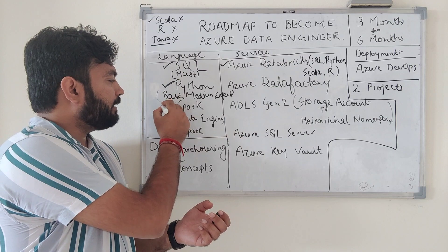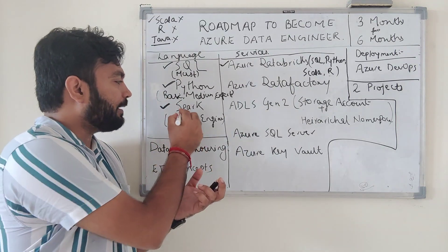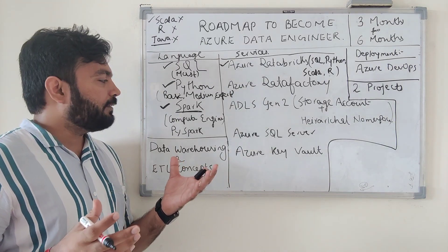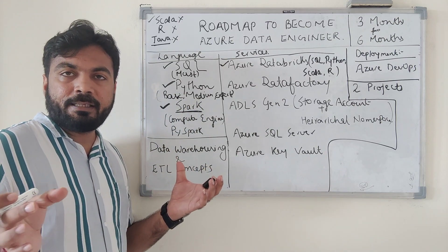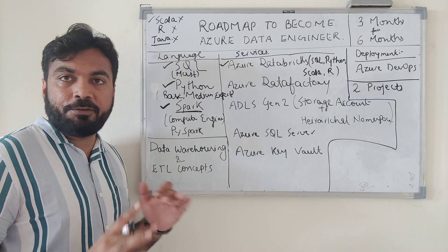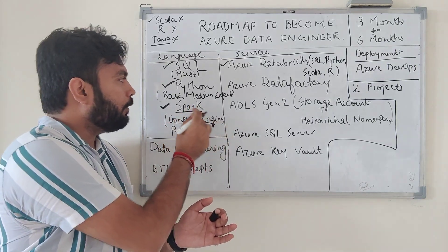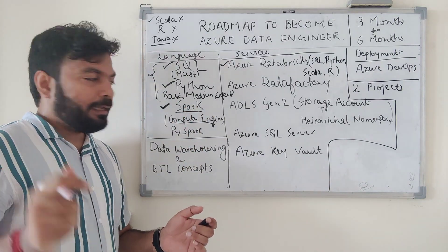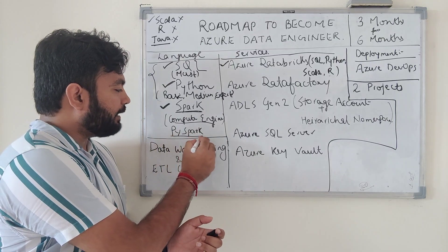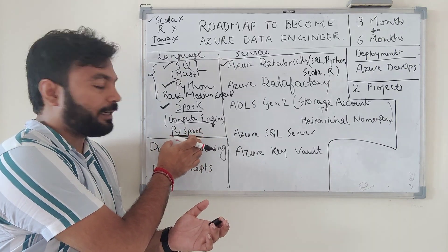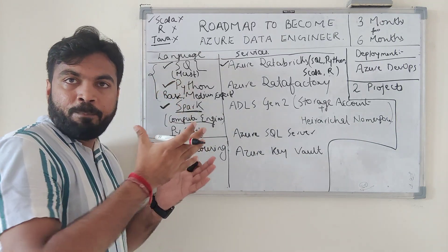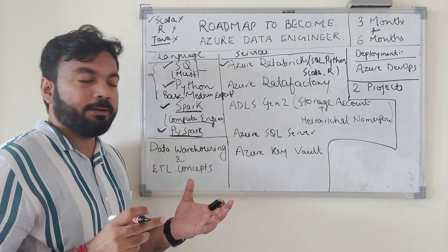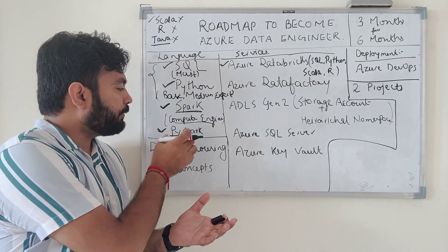Now let's come to another very demanding technology: Apache Spark. Spark handles data that is very large in size. A common question is whether Spark is a programming language — the clear answer is no. Spark is a compute engine over which your code written in SQL or Python will run. We use Python's API over Spark, and that is called PySpark. Since we are using Python, we should choose PySpark.